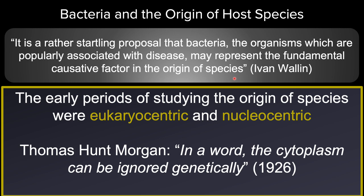Many would say that this period was eukaryocentric — Darwin didn't think about microbes — and nucleocentric, because we start mapping phenotypes to genotypes at this point. Thomas Hunt Morgan, another famous Drosophila evolutionary geneticist and founder of the modern synthesis merging Mendelian genetics and Darwinian evolution, wrote incorrectly in 1926: 'In a word, the cytoplasm can be ignored genetically.' So let's just throw out mitochondria, chloroplasts, and all the bacteria that live in the cytoplasm of cells. This is a reflection of the time, and it's important to think about how even our luminaries made such polarizing statements about what we'd ultimately discover.